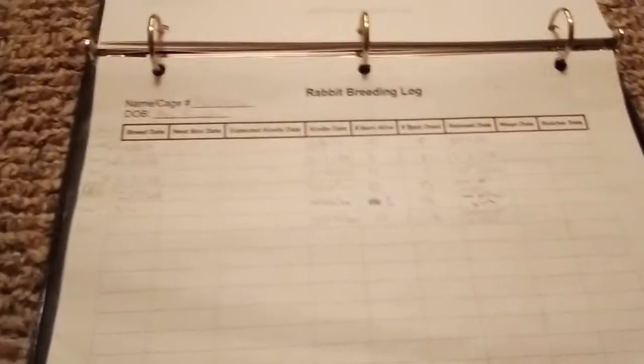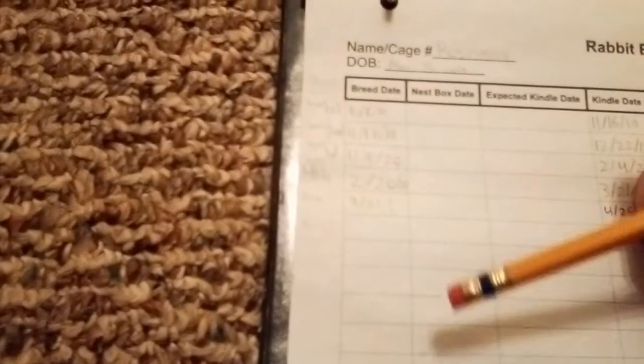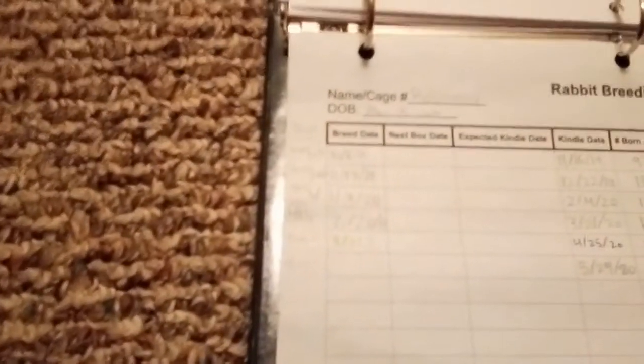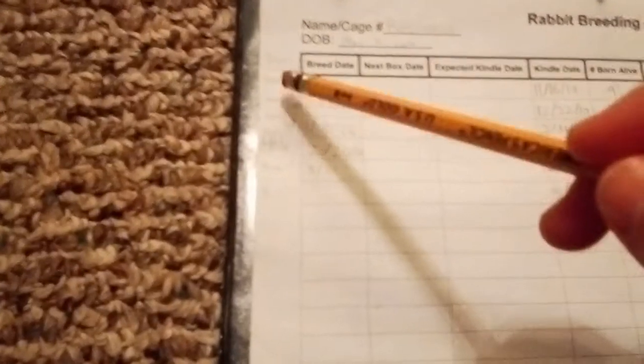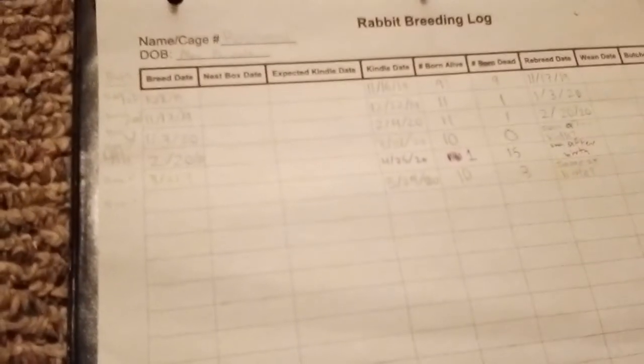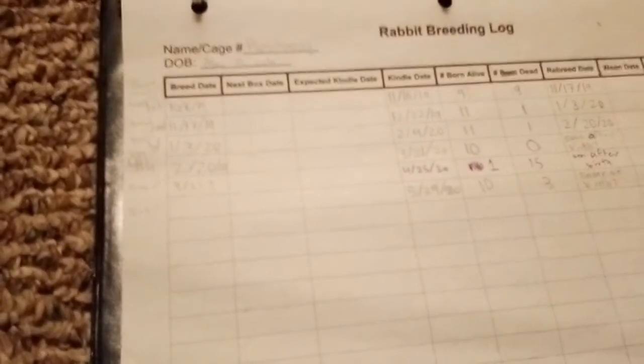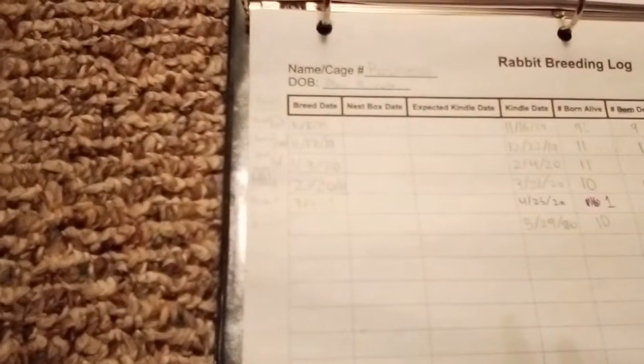I added an extra column over here - it's buck. The buck they were bred with I feel like is something to know. If I notice each time she's bred with Basil she has six kits, but whenever she's bred with Barlow she has eight, Barlow must produce more kits. If I didn't know which buck was which, it'd be hard to tell. I've added myself a little extra column with the buck she was bred to.